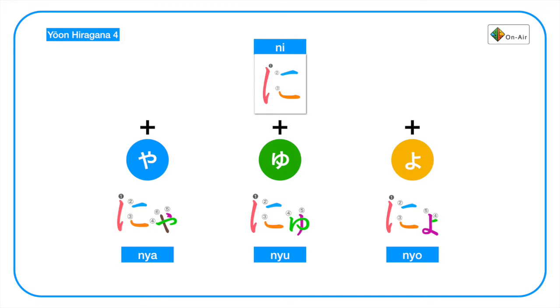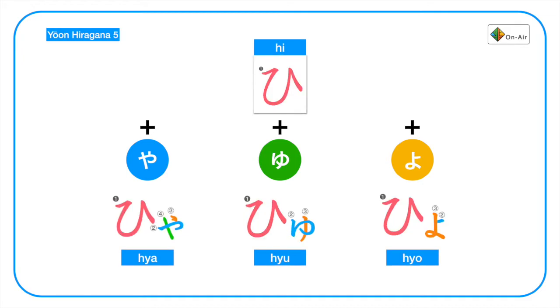Next, hi plus ya, yu, yo. We have hya, hyu, hyo. Again, hya, hyu, hyo.